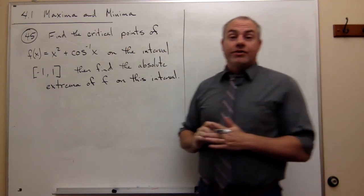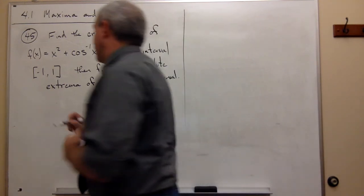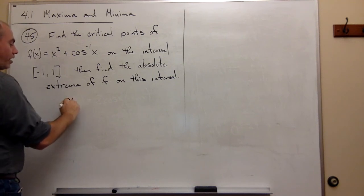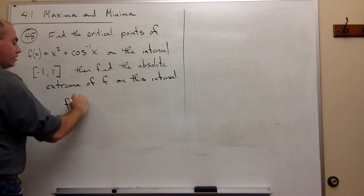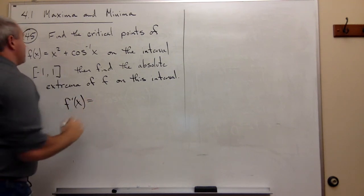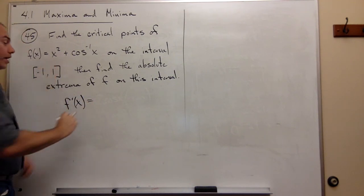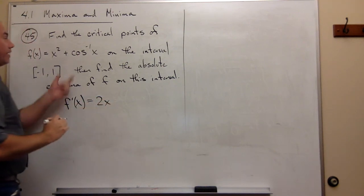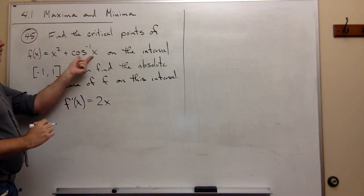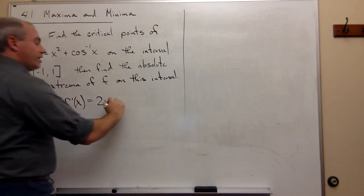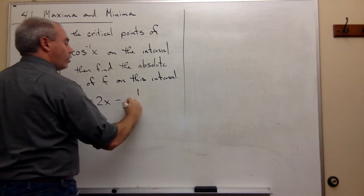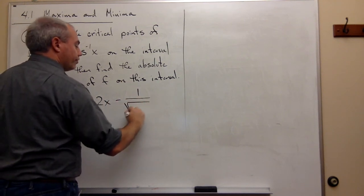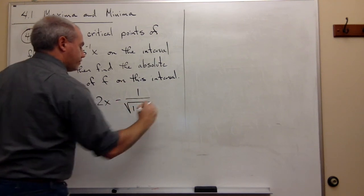So let's take the derivative. We get f prime of x is equal to the derivative of x squared, which is 2x, and the derivative of cosine inverse of x is negative 1 over the square root of 1 minus x squared.